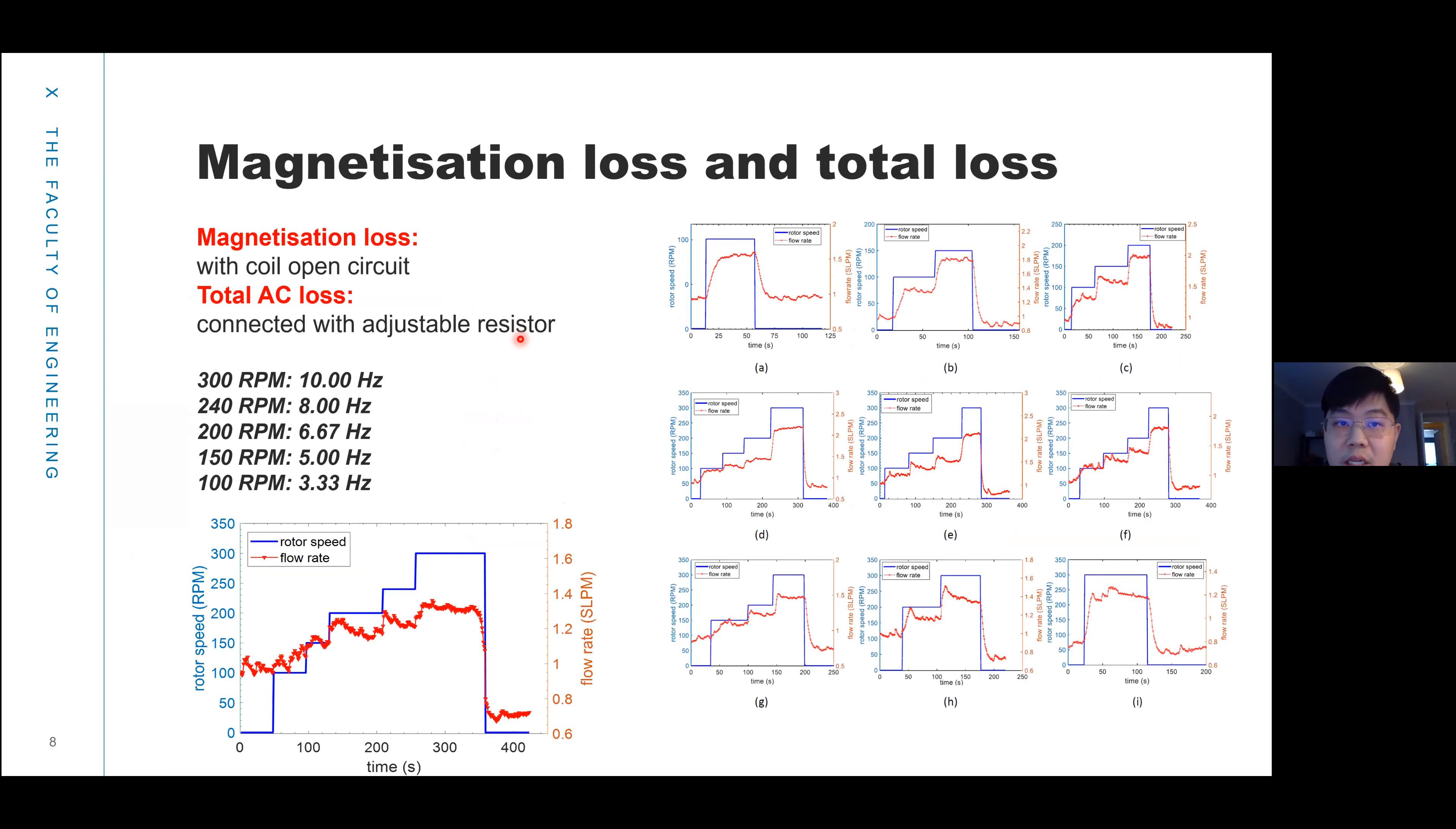Here is the result of the magnetization loss and the total loss of this coil. First we keep the coil open circuit and rotate the rotor. This is the rotor speed and the flow rate. We can use this flow rate to calculate the AC loss inside the coil. Here we measure the total loss of this coil. We connect the coil with a resistor and run it with different frequency and different resistor values, so there is a different transport current inside the coil.